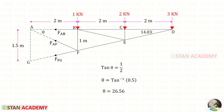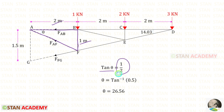We need to find the angle for FAF. Let us call this angle theta. Taking the relevant triangle and applying the tan formula, tan theta equals 1 over 2. Solving for theta, we get 26.56°.